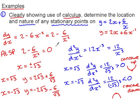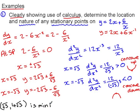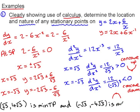In conclusion, we have located two stationary points and can describe their nature. The first is at (root 3, 4 root 3) and this is a minimum turning point. The second is at (negative root 3, negative 4 root 3) and this is a maximum turning point.